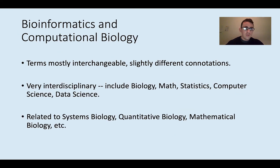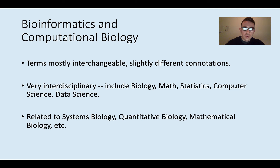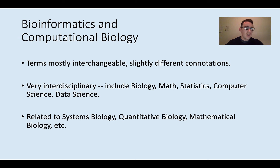This is where bioinformatics and computational biology come in. They're basically a field of study where the goal is to take this huge amount of raw data from modern biology experiments and draw actual insights from it. The terms bioinformatics and computational biology are mostly used interchangeably, so don't get too hung up on the differences. Both fields are very interdisciplinary — they include biology, math, statistics, computer science, and data science.